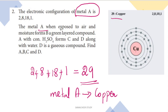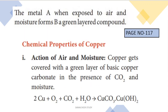The next question is: this metal A, when exposed to air and moisture, forms B — a green layered compound. We will now look at the chemical properties of copper. The first property is the action of air and moisture. The metal is copper.